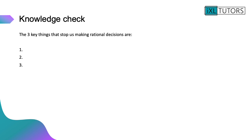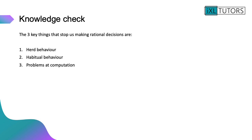Now just jot down the three things that stop us making rational decisions. You should have: herd behavior, habitual behavior, and problems with computation.